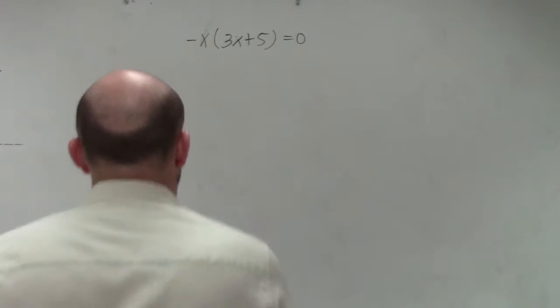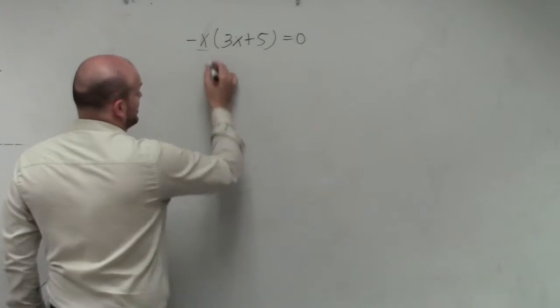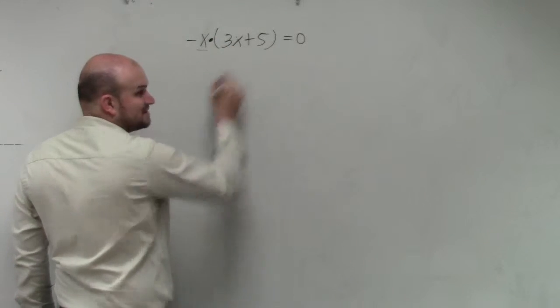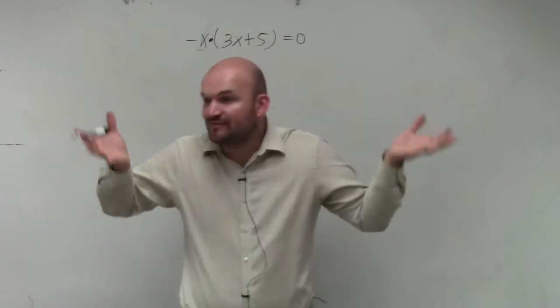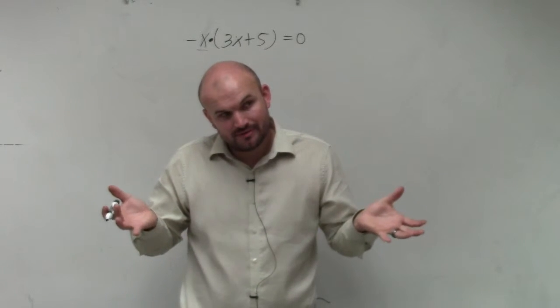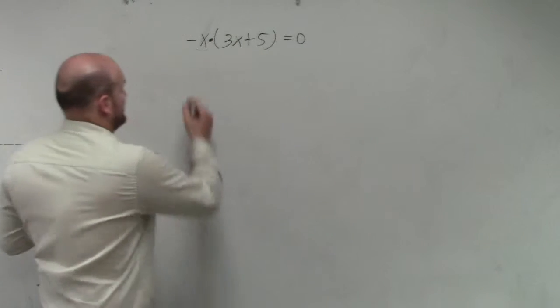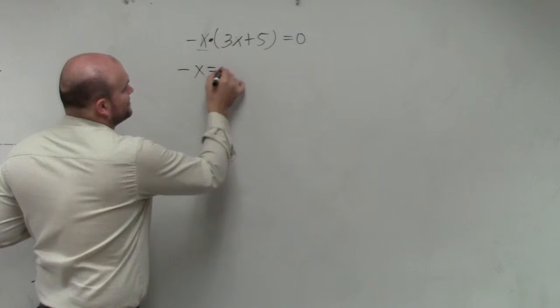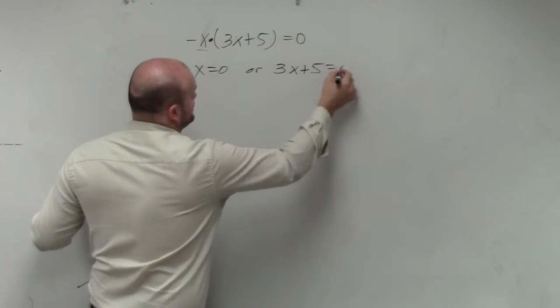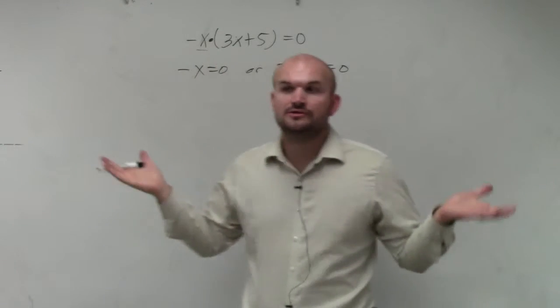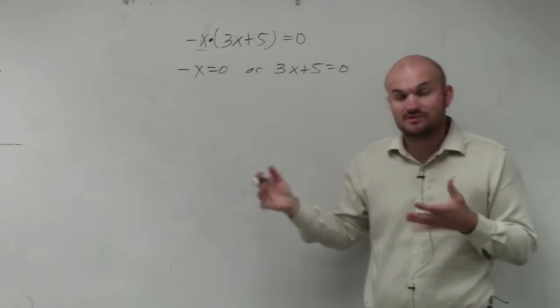So basically, ladies and gentlemen, in this case you can see we have a term multiplied by this expression, and that product is equal to 0. So any time you have the product equal to 0, you can apply the zero product property, basically saying negative x equals 0, or 3x plus 5 equals 0. That's all you simply do - have the product, set them both equal to 0.